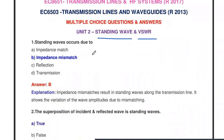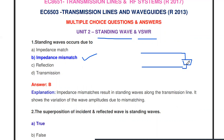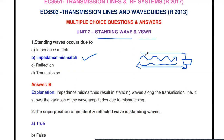The first question: standing waves occur due to — impedance match, impedance mismatch, reflection, or transmission? The answer is impedance mismatch. In a transmission line, if the load impedance ZL is not equal to the characteristic impedance Z0, that is an impedance mismatch. The incident wave (traveling from sender to load) is partially reflected back, and the superposition of the incident and reflected waves is called a standing wave.